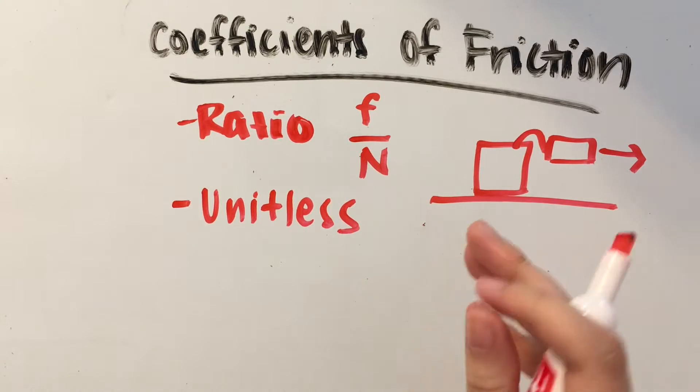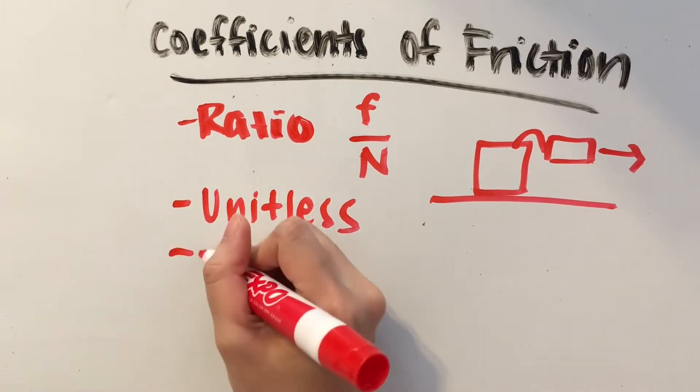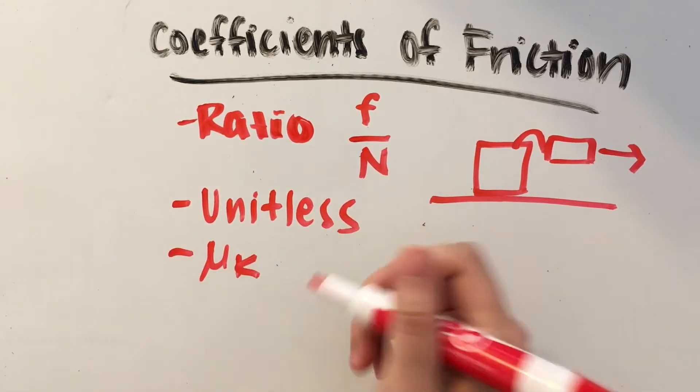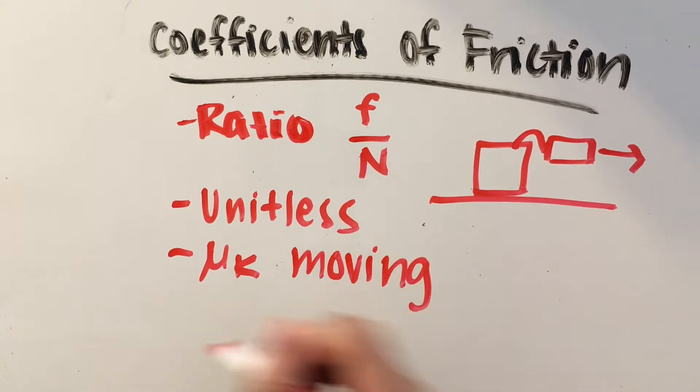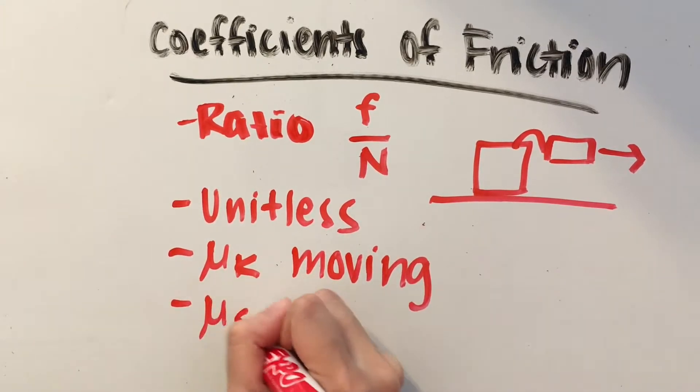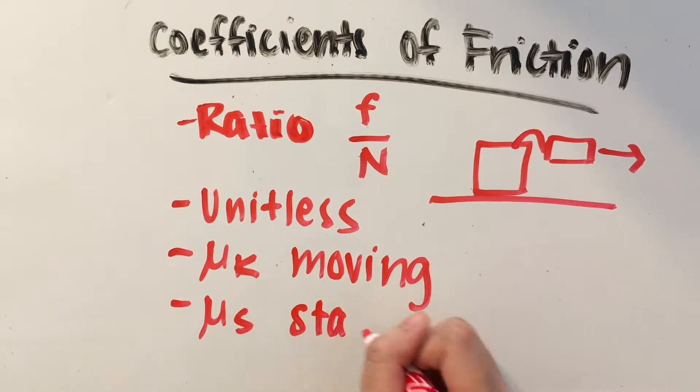And there's going to be two coefficients of friction that I'll be talking about today. The first one is the coefficient of kinetic friction, which is used to describe a system that's already moving, and the coefficient of static friction, which will describe a system that stays stationary.